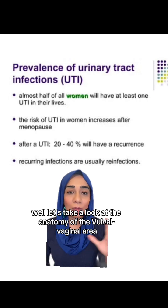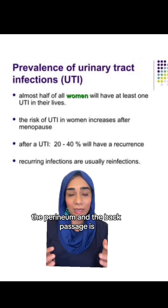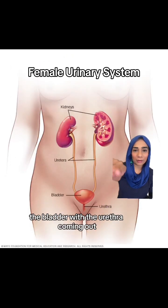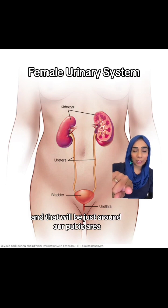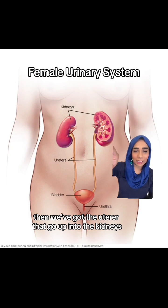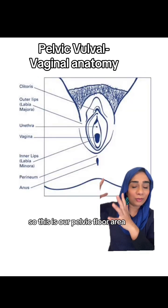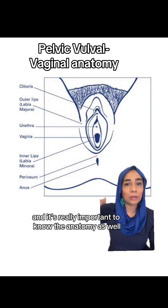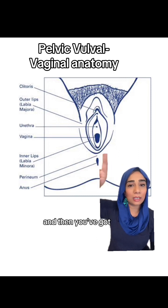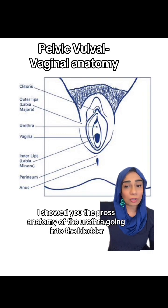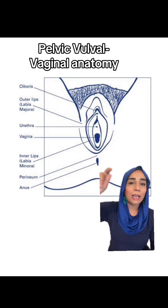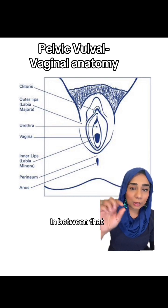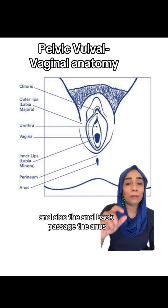Let's take a look at the anatomy of the vulval vaginal area and where the urethra, the perineum and the back passage is. We've got the bladder with the urethra coming out around our pubic area, and then we've got the ureters that go up into the kidneys. In the vulval vaginal area, from the top you'll see the clitoris, and underneath that you've got the urethra. Then you've got the vaginal opening, and around that you've got the labia majora and labia minora. In between that, you've got the perineum and also the anal back passage — the anus.